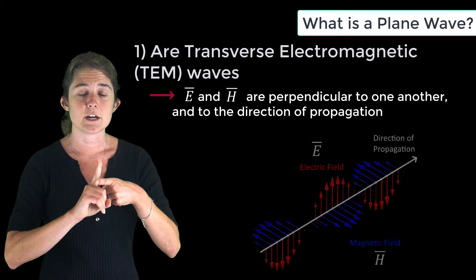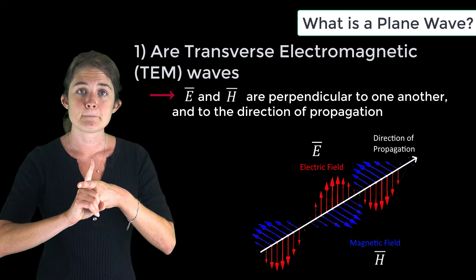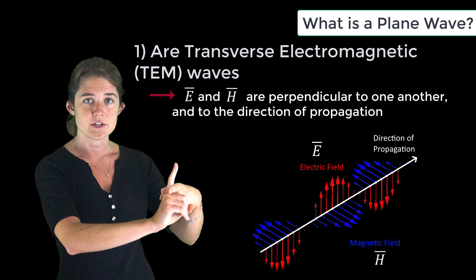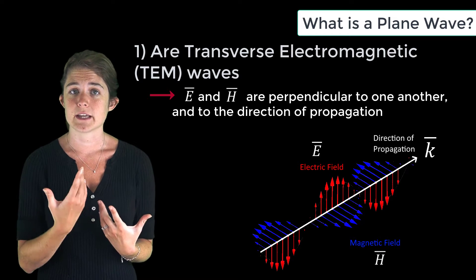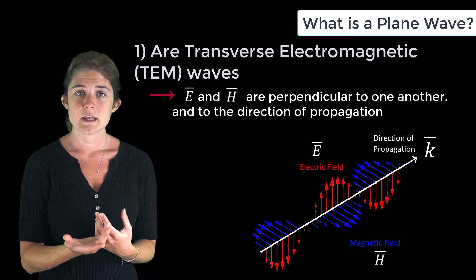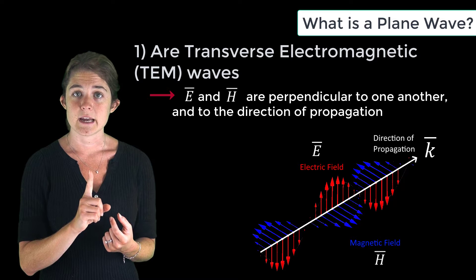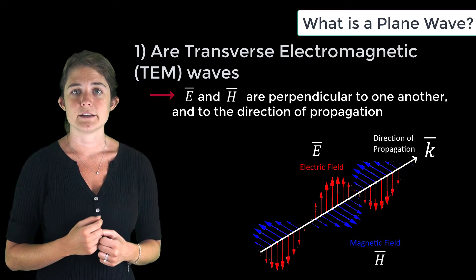have electric and magnetic fields that are perpendicular both to one another and to the direction of propagation, which is indicated by the k vector. As long as the wave is traveling in a normal right-handed medium, the vectors E, H, and k will form a right-handed triad.